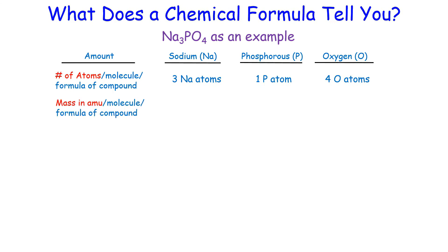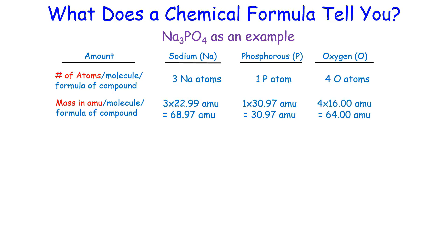Next, the total mass of each element in one formula unit, using amu as the unit. Since we have 3 sodium atoms, 3 times sodium's atomic mass gives 68.97 amu. Phosphorus has only one atom, so it is simply 30.97 amu — the atomic mass of phosphorus. Oxygen has 4 atoms, so 4 times oxygen's atomic mass gives 64 amu.